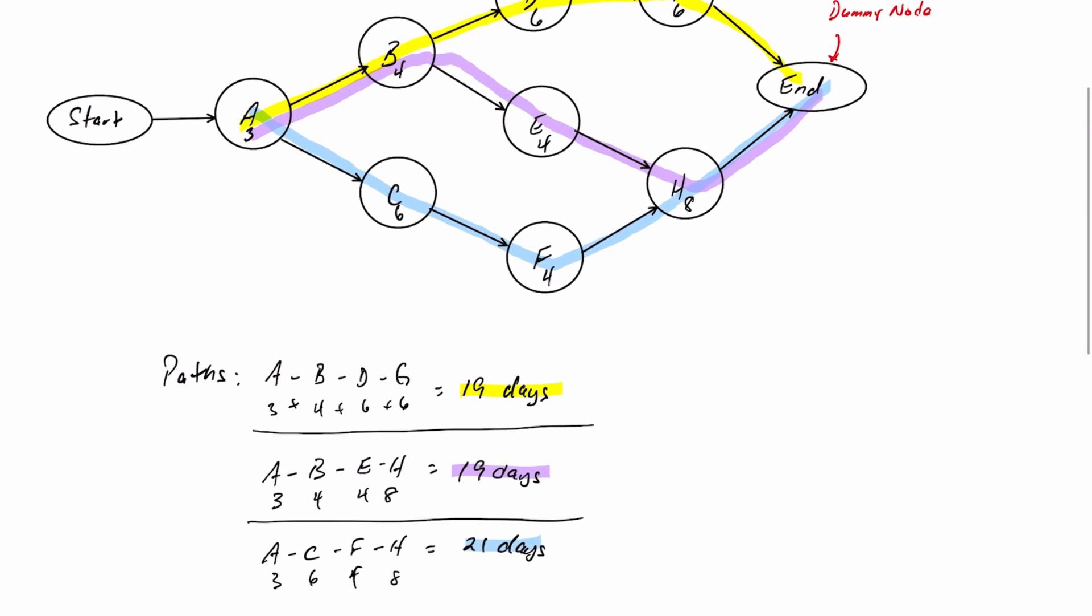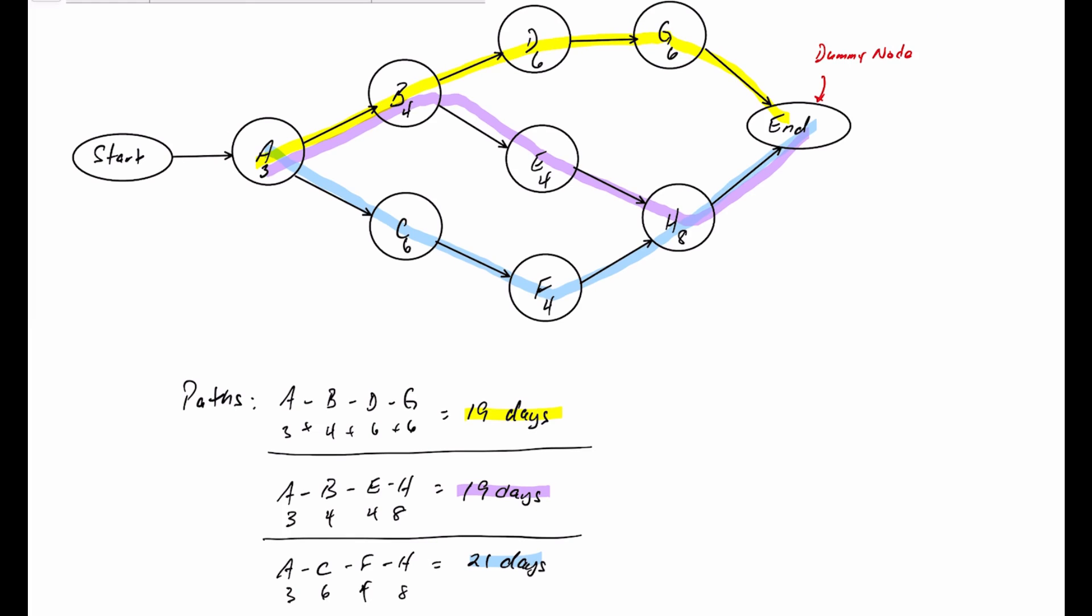So now, as you can see in our diagram, we have three paths. A, B, D, G is 19 days. A, B, E, H takes 19 days. And A, C, F, H takes 21 days. The path that has the longest time is known as the critical path. So in our example here, the critical path is A, C, F, H, and it will take 21 days to complete. The project cannot be completed in less than 21 days.